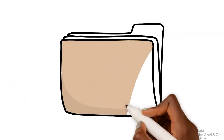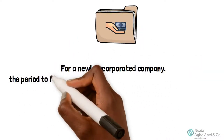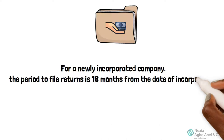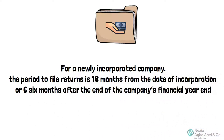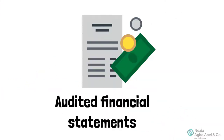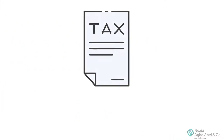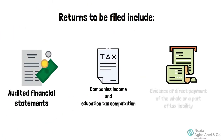For rendition of returns, a newly incorporated company must file returns within 18 months from the date of incorporation or six months after the end of the company's financial year end. The returns to be filed include audited financial statements, companies income and education tax computation, and evidence of direct payment of the whole or part of the tax liability.